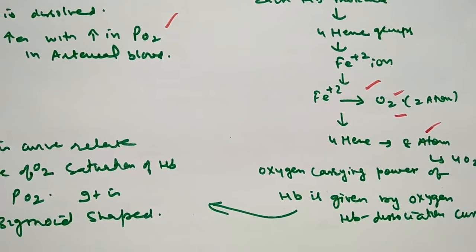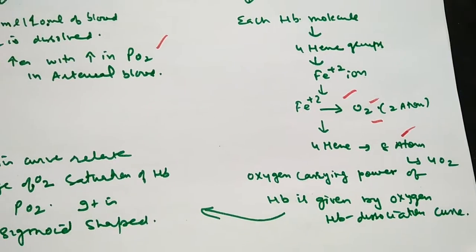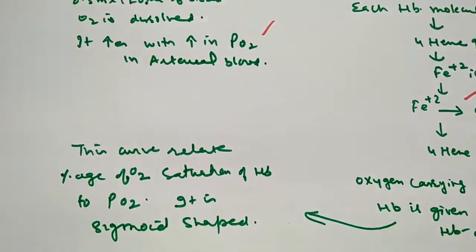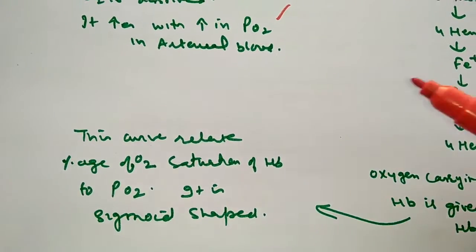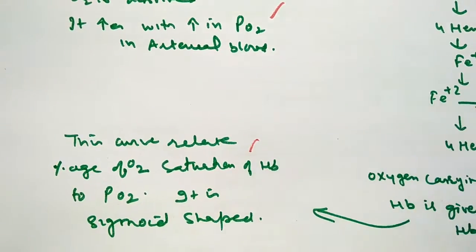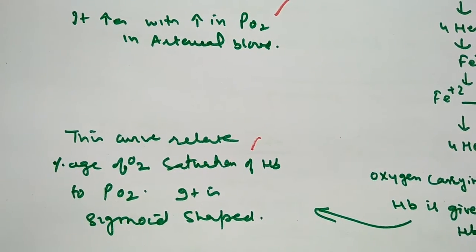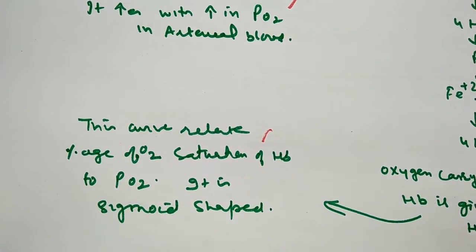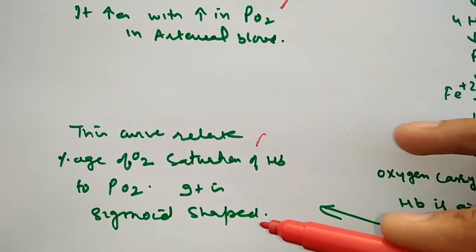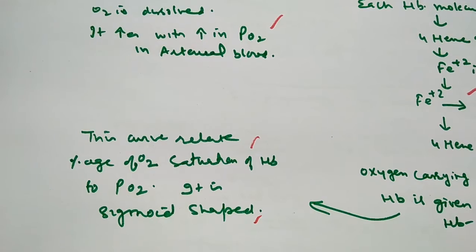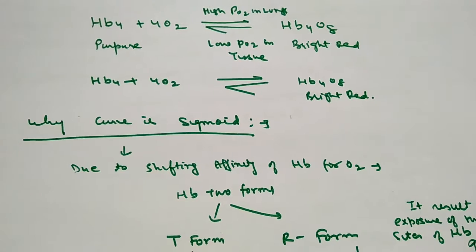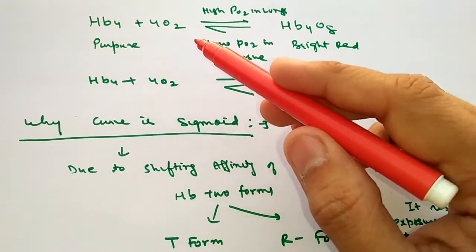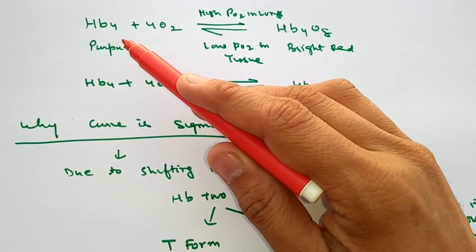The oxygen-carrying power of hemoglobin is given by the oxygen dissociation curve, also called the hemoglobin dissociation curve. It determines the percentage of saturation of hemoglobin with partial pressure of oxygen, and it is sigmoid in nature. I will discuss it in more detail later. Next, there is the oxygenation of hemoglobin.